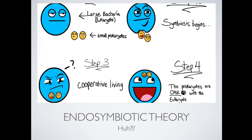Big word for the day: endosymbiotic theory. Scientists were trying to come up with an idea about how prokaryotic cells moved to being eukaryotic cells — or better stated, how eukaryotic cells came to exist and where did organelles come from. As scientists started to think through the possible origins of organelles, they realized that chloroplasts and mitochondria are a little bit different from the others in that they've got a double membrane where other organelles have a single membrane, and they have their own DNA. Scientists came up with the hypothesis that at some point in time, you had some small prokaryotes hanging out, and there was a larger bacteria — who might have been a eukaryote — hanging out too. The prokaryotes started to cozy up to the eukaryote, and thus began symbiosis.